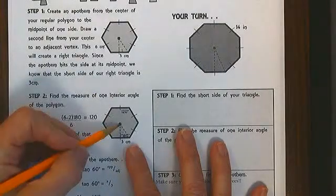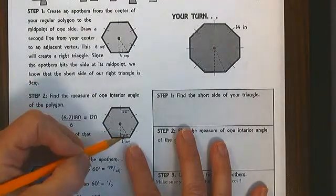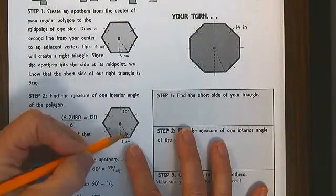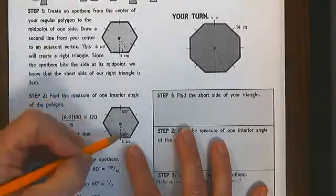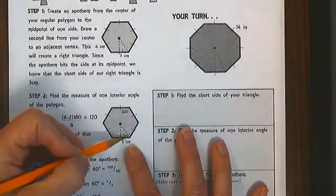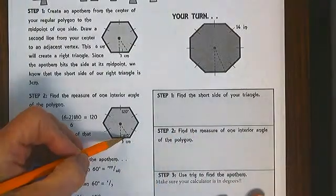But the radius bisects the interior angle, so this angle is going to be 60 degrees. Now, why is that interesting or cool?